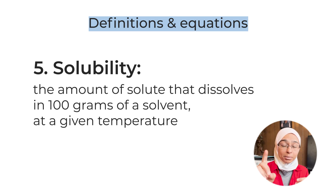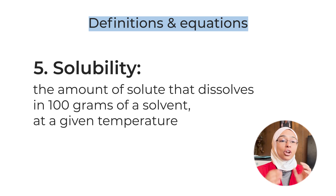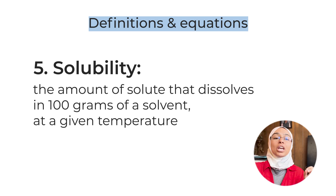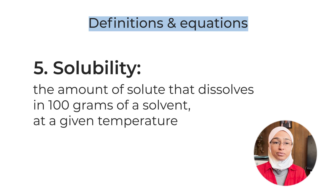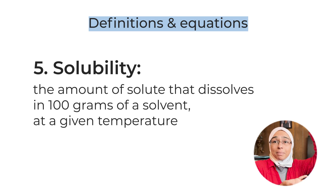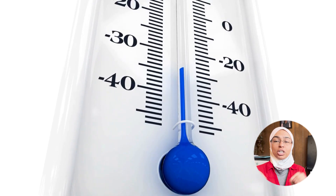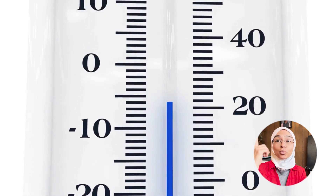Definition number five — solubility — is common and I've seen students lose marks on it, so do not miss this. Solubility is the amount of solute dissolved in 100 grams of a solvent at a given temperature. Students forget two things: first, the specific amount of solvent — 100 grams — because the more solvent you have the more you can dissolve. Second, students forget 'at a given temperature,' which is worth one mark — do not forget it.